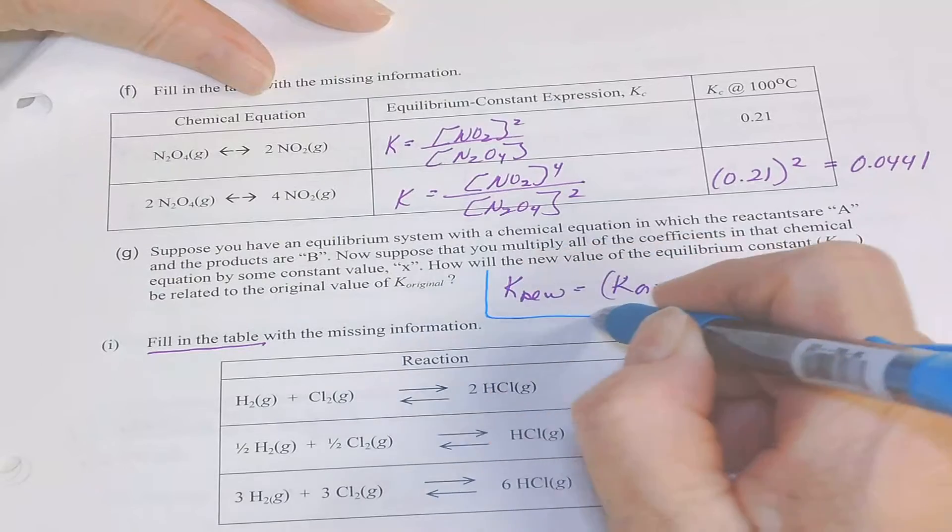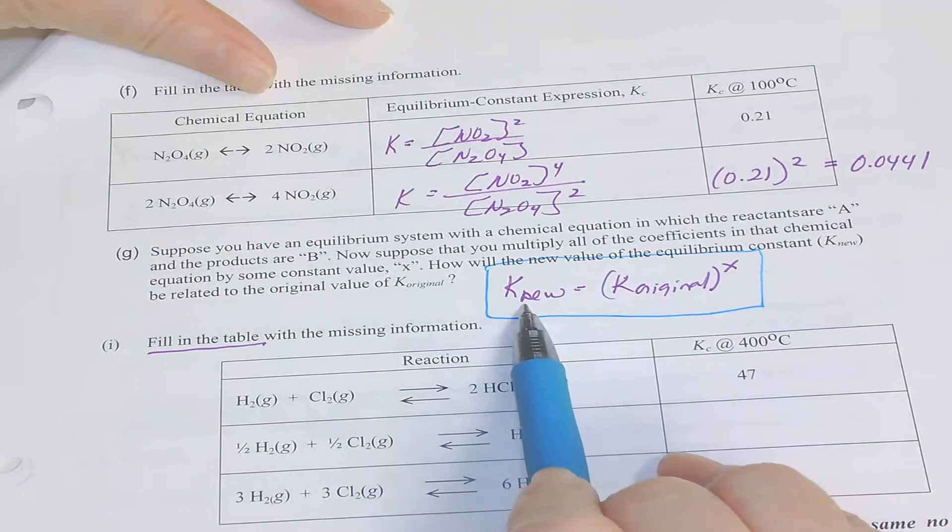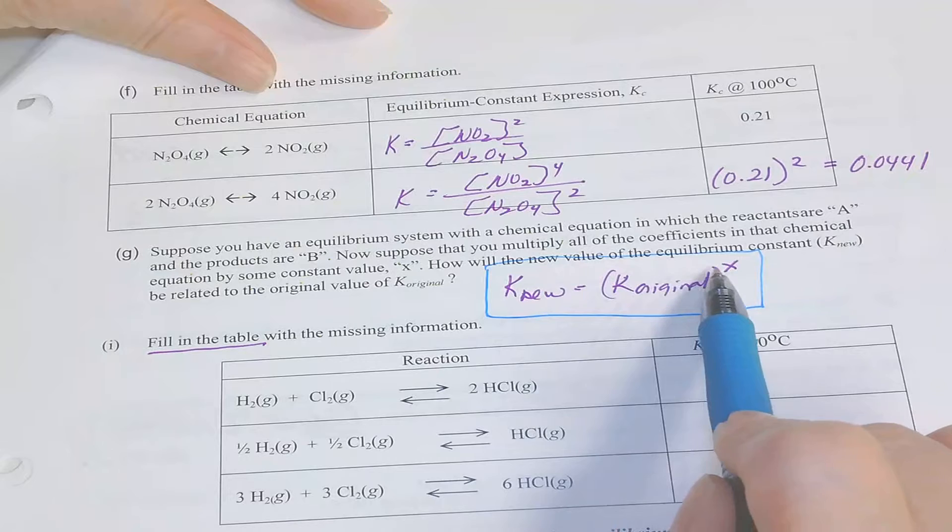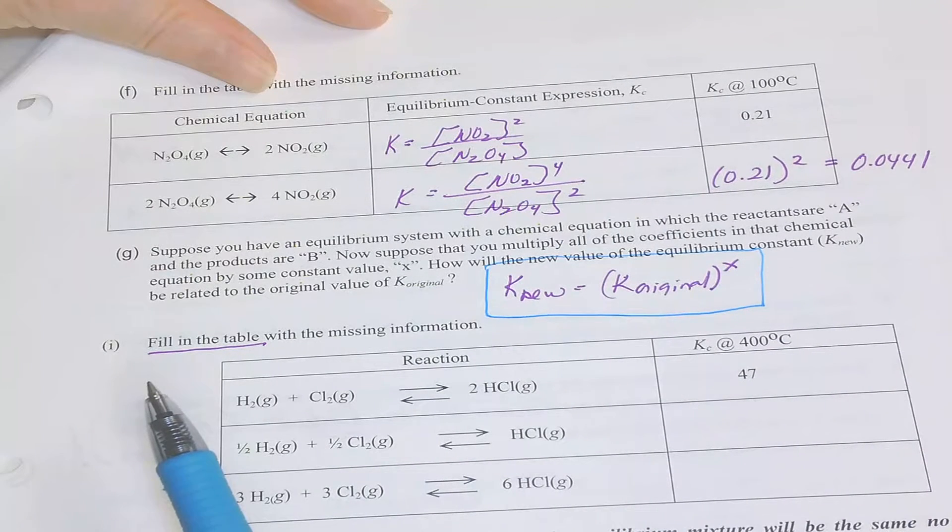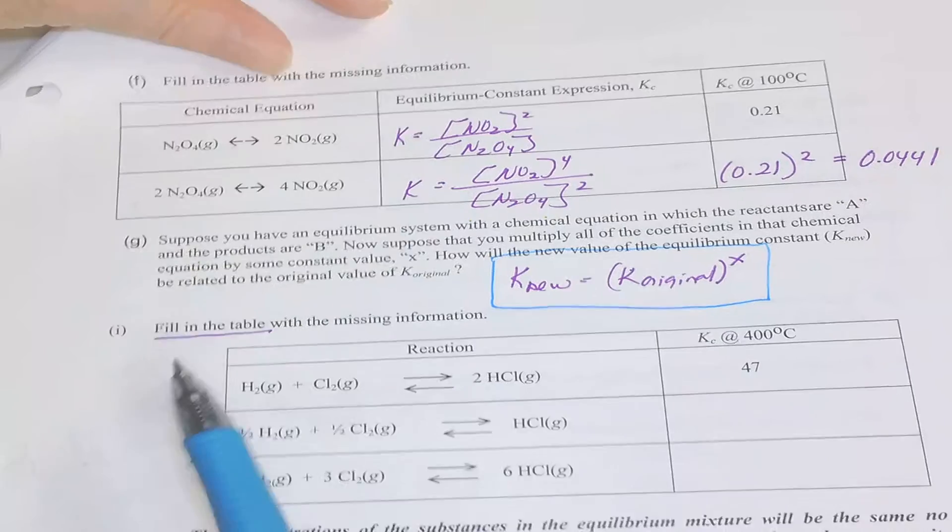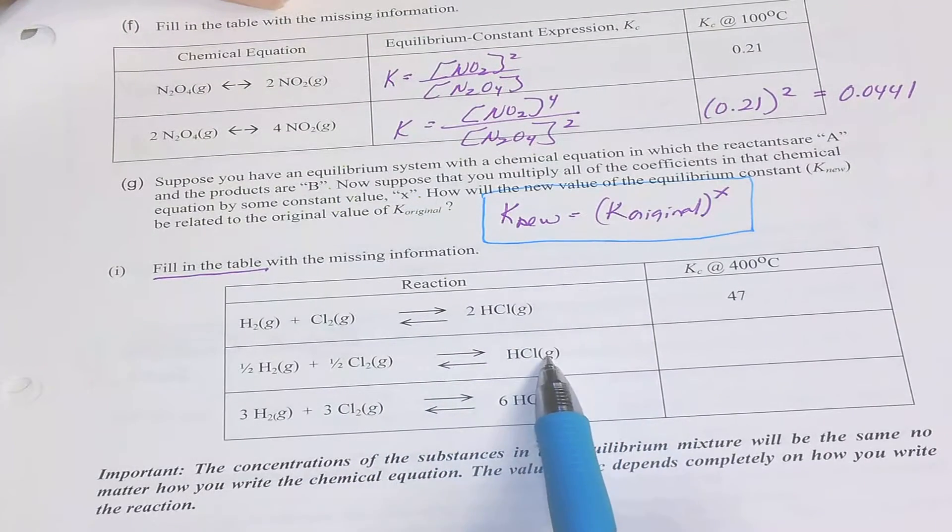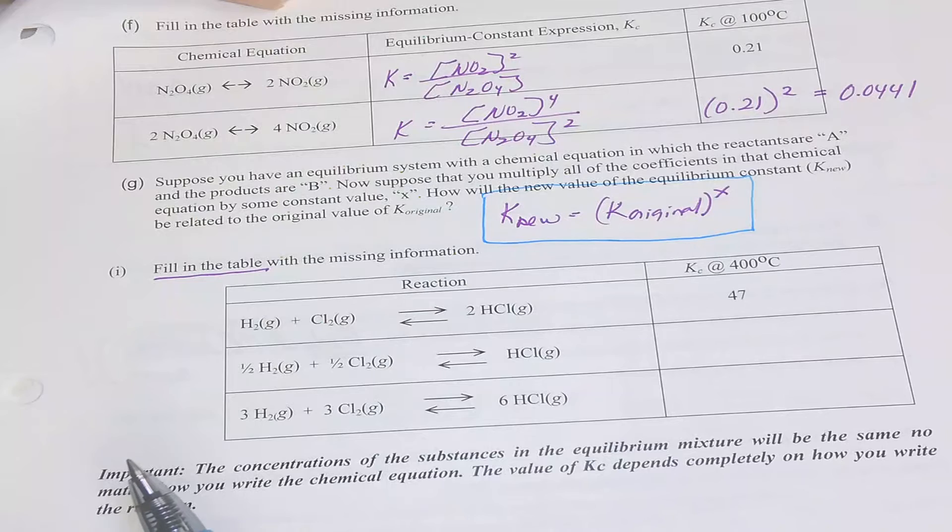So the relationship is your new K value will be your original raised to the power that you multiplied those coefficients by. See if you can do this to these two equations.